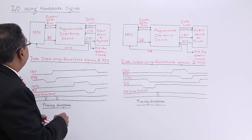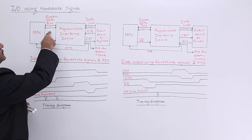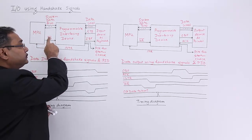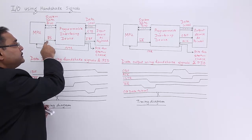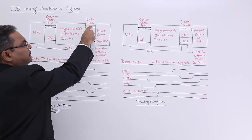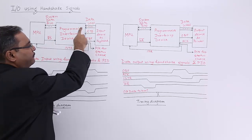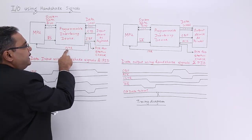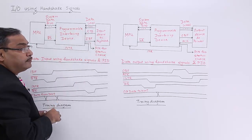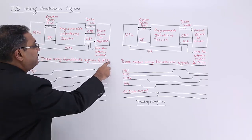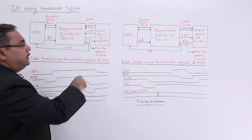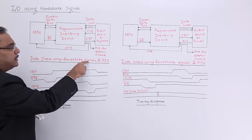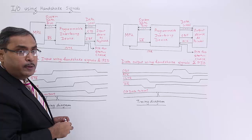Here we have the MPU and there is a system data bus. RD-bar means read, and bar means it is active low. The signals are: data lines, strobe, and input buffer full. These are strobe, input buffer full, and interrupt request — the rest are written explicitly. PID means programmable interfacing device. Here we are considering data input using handshaking signals and the PID.